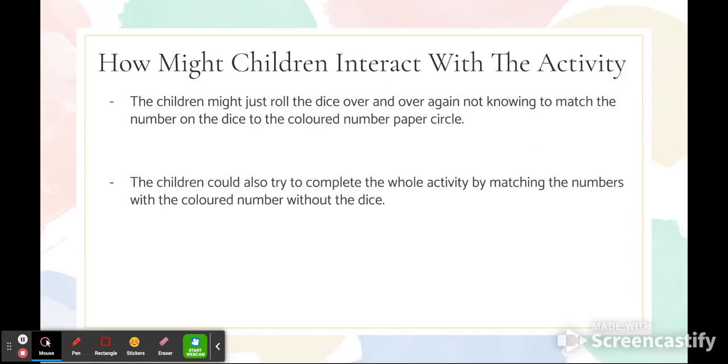How might children interact with this activity? The children might just roll the dice over and over again, not knowing to match the number on the dice to the colored number pieces on the caterpillar. The children could also try to complete the whole activity by matching the numbers with the colored numbers without the dice.